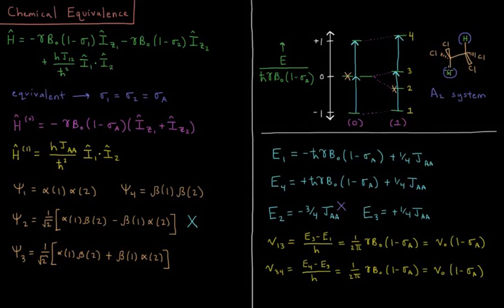So we have two protons in this molecule. They're on adjacent carbons to one another. But you'll notice that due to the symmetry of the molecule, these two protons are chemically equivalent. You can't say which is which because the molecule, due to its symmetry, these two protons are in exactly the same chemical environment.